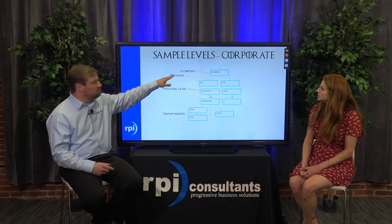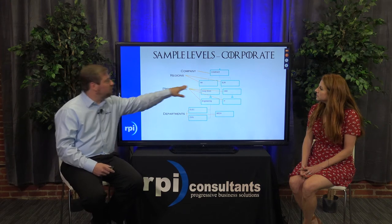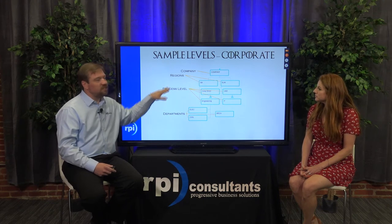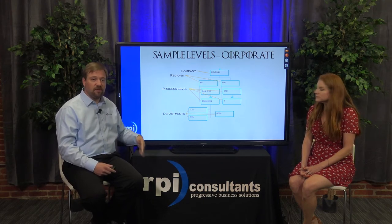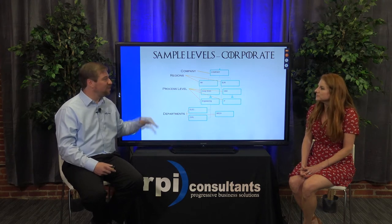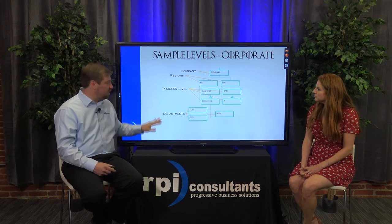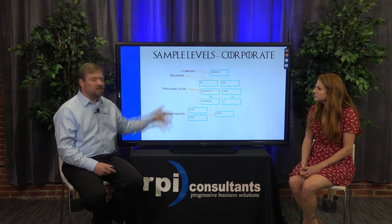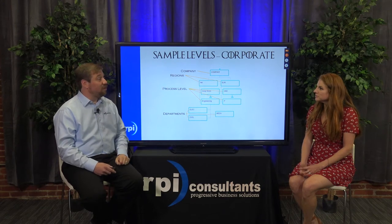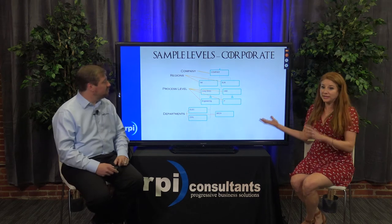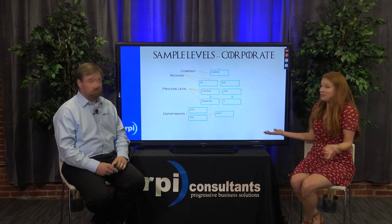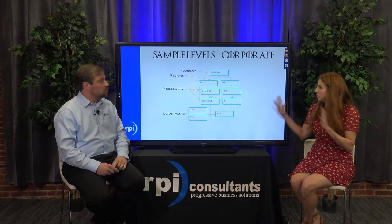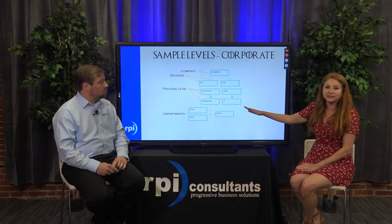For example, we have our company at the top, then we took the liberty of adding in our regions — something we can define ourselves. Then we see our process level, just as we're familiar with in S3. We've got two of those three building blocks from the S3 world: company, process level, and then departments underneath it. It's a pretty straightforward structure, but we can make it a lot more complex. If S3 has worked for you, you can definitely reflect that same structure in Global HR.